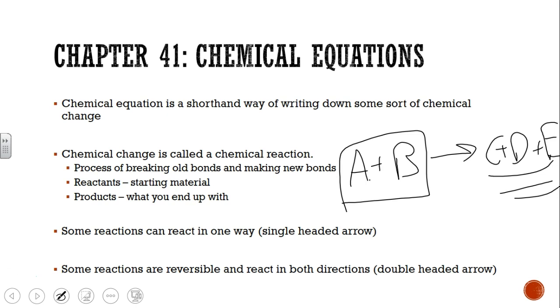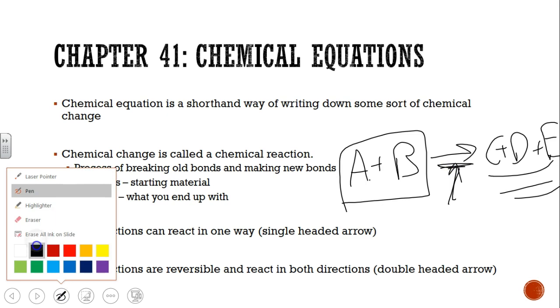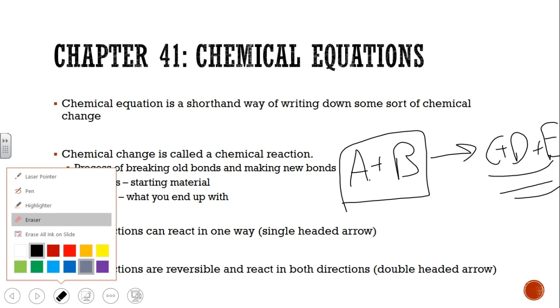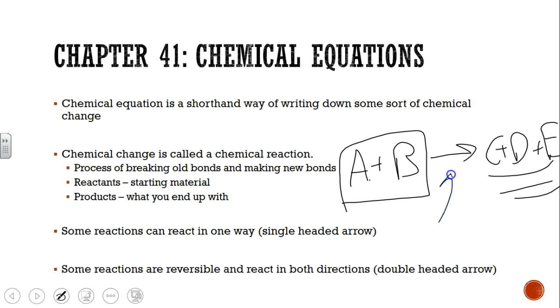Now let's talk a little bit about this arrow, because that arrow, believe it or not—can I point to an arrow with an arrow and not be confusing? I'm gonna change colors and go like this. So this arrow here, that implies that this reaction only happens in one direction, that A plus B will form C plus D plus E, and that's it.